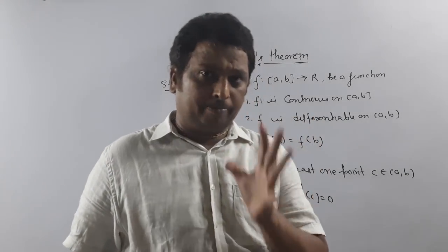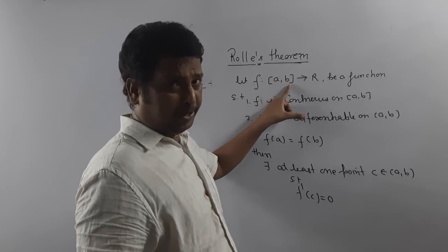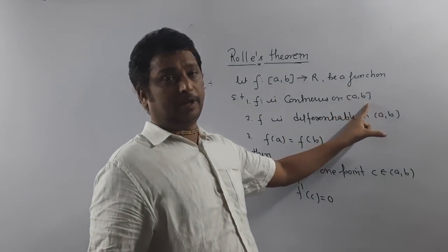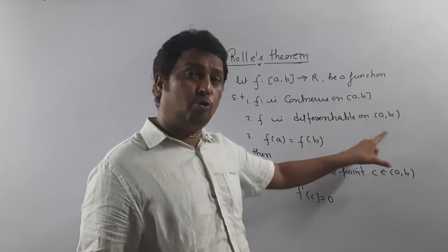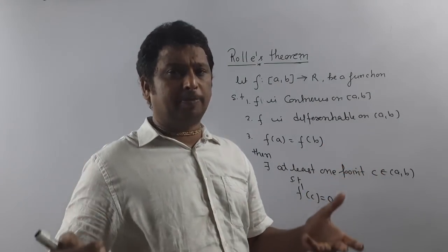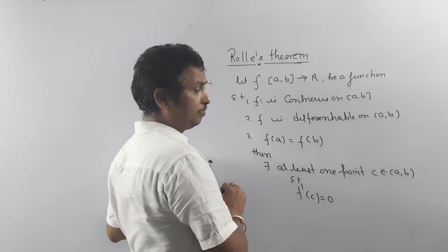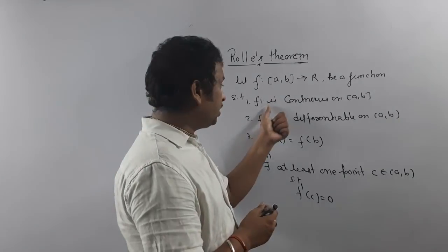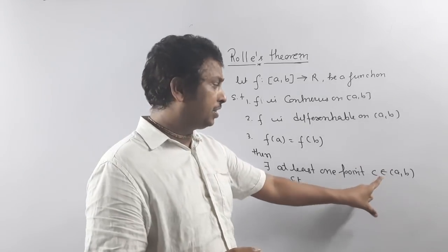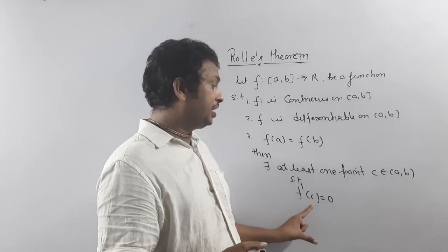For Rolle's Theorem, if the function is defined on the closed interval [a, b], then f must be continuous on the closed interval [a, b], f must be differentiable on the open interval (a, b) — differentiability at the endpoints is not required. The third condition is f(a) = f(b). If all three conditions are satisfied by f, then there exists at least one point c between a and b such that f'(c) = 0.